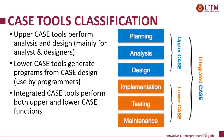This figure shows the CASE Tools classification. There are two main types: Upper CASE and Lower CASE, and both together are called Integrated CASE. Upper CASE covers planning, analysis, and design — these tools perform analysis and design and are mainly used by analysts and designers. Lower CASE covers implementation, testing, and maintenance — it generates programs from CASE design and is mainly used by programmers. Integrated CASE performs both upper and lower CASE functions.